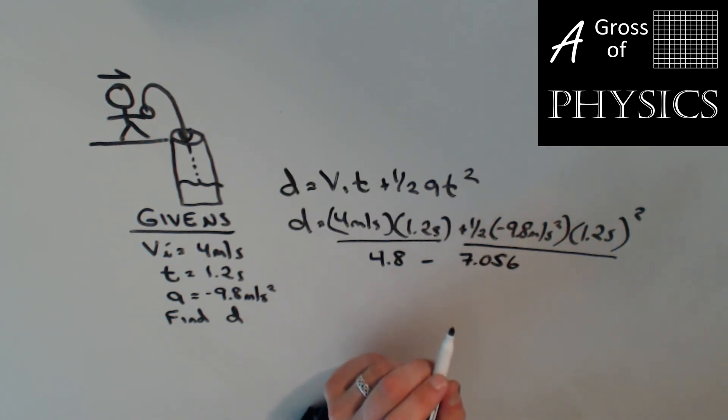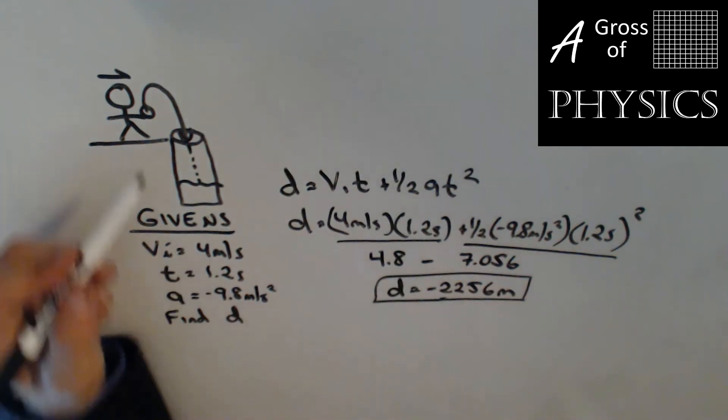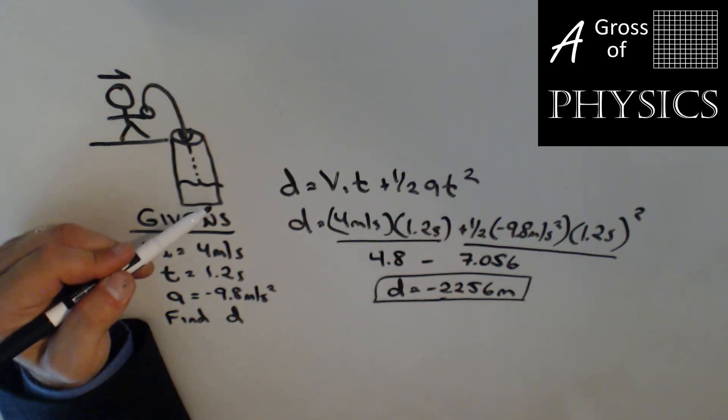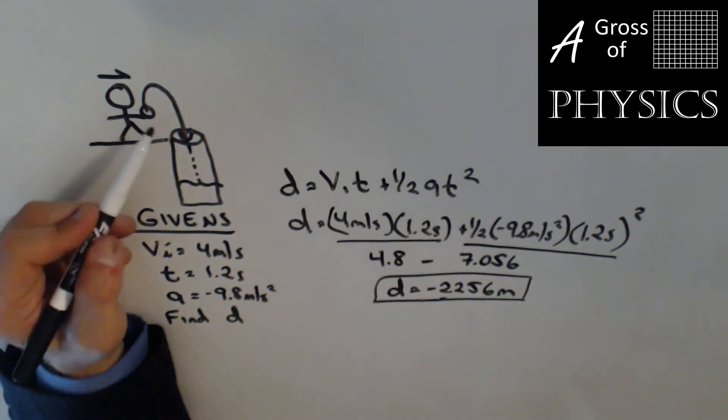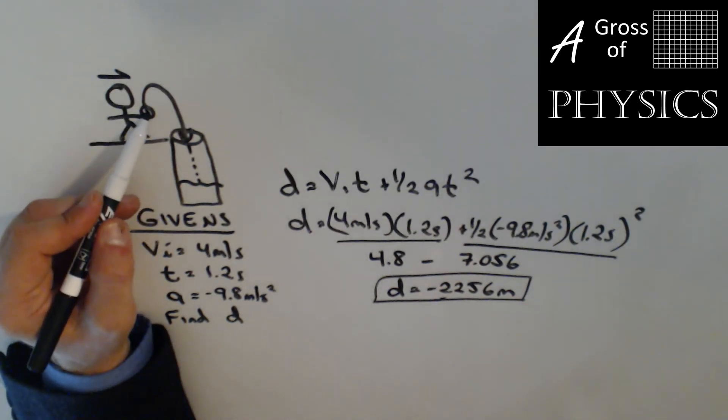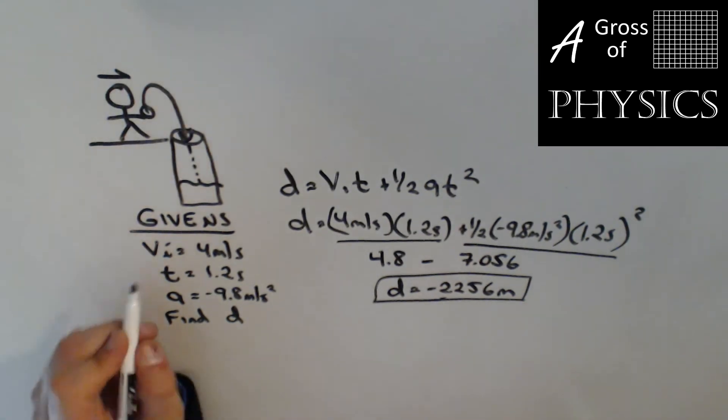When I do 7.056 from 4.8, I end up getting a displacement of negative 2.256 meters. So it is 2.256 meters below the release point. Although the object moved upward first and then down into the well, the vector equations take care of all the nuances. We don't have to worry about the fact that it went up first. As long as we put our initial velocity as a positive, all the numbers work out because of the vector nature of these equations.